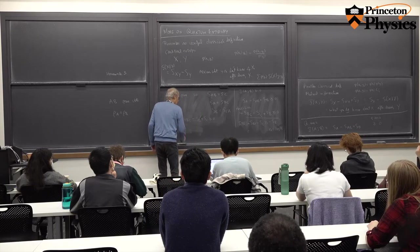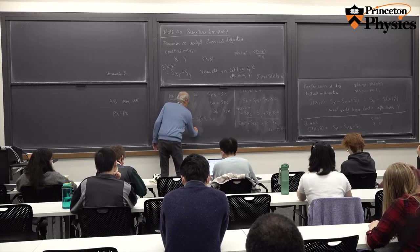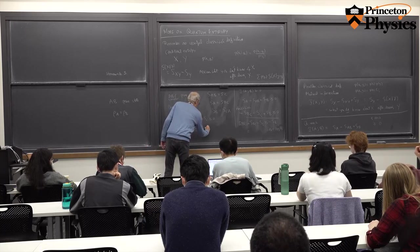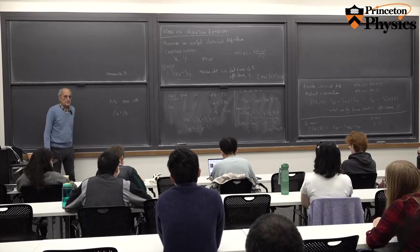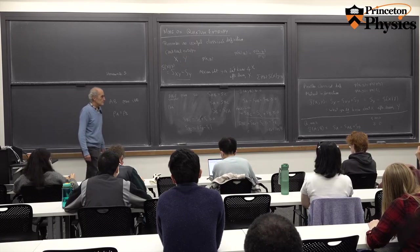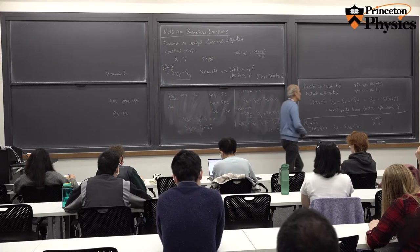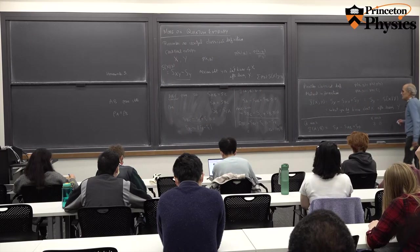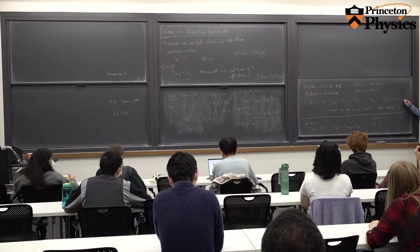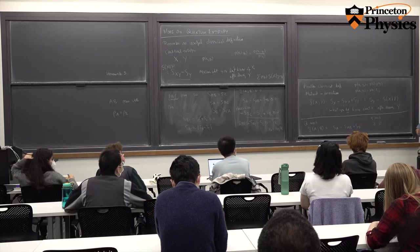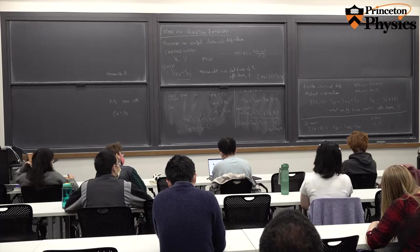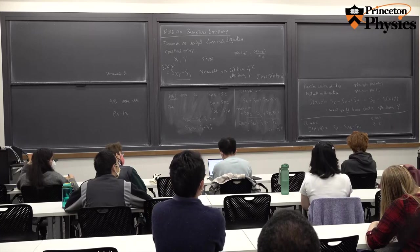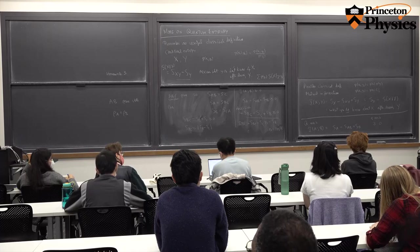To resolve a confusion from earlier: in the previous lecture we did prove classically that mutual information was positive. We did so by first proving that relative entropy is positive, and then showing that mutual information was a special case of relative entropy. That's what we're now about to do quantum mechanically.